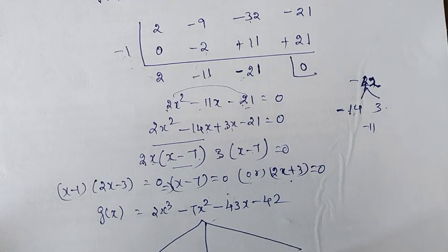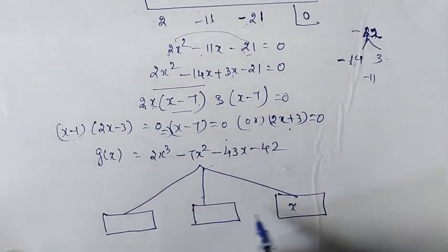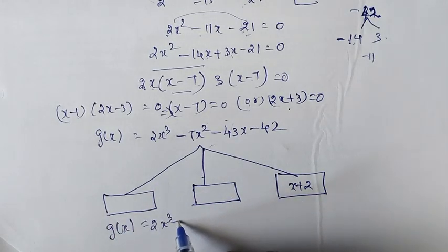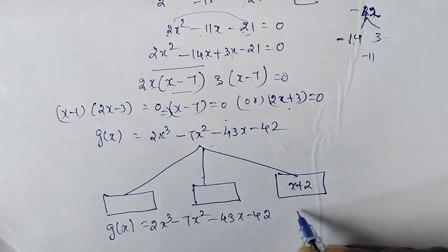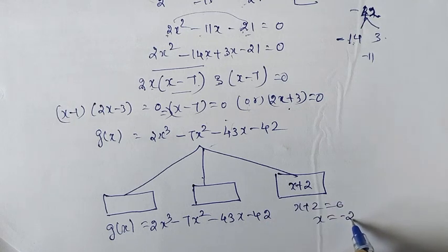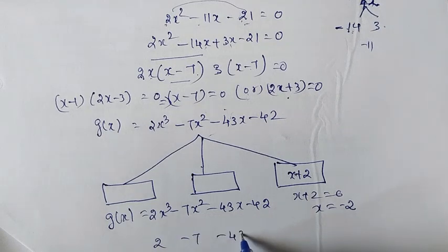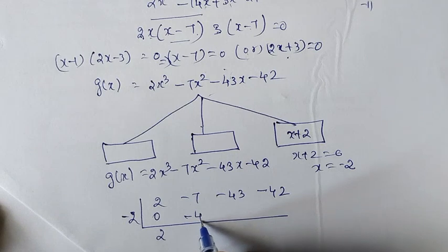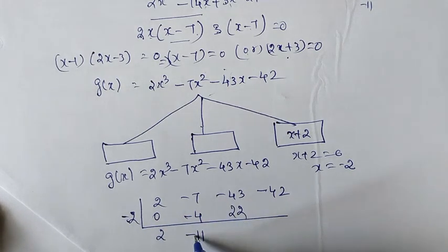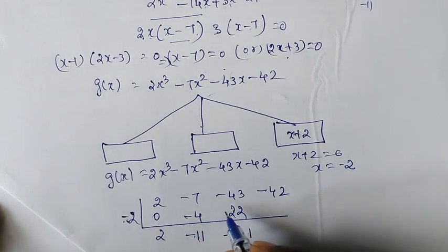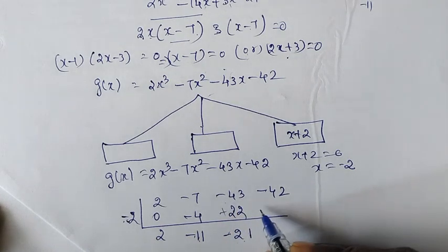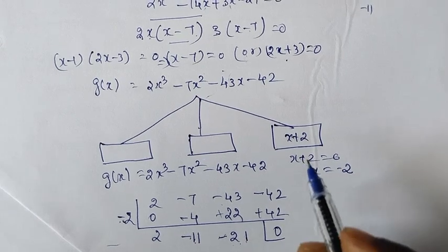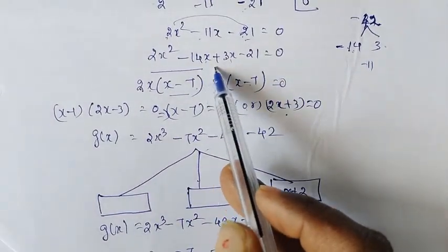For G of x, x plus 2 is a factor, so x equals minus 2. The coefficients are 2, minus 7, minus 43, minus 42. Adding minus 2: we get 2; minus 4 gives minus 11; 11 times 2 is 22. Multiplication: minus into minus is plus, so minus 21. The greater number determines the sign.